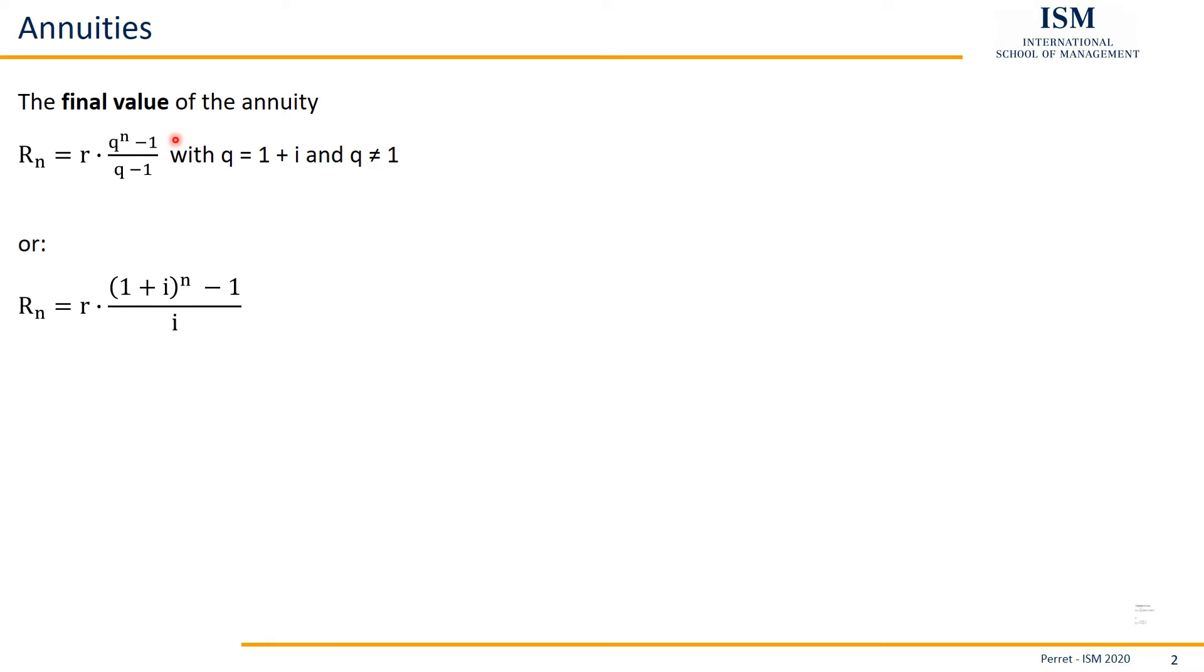For this, first let's rewrite this formula in a slight fashion by just replacing Q with 1 plus I, because then up here becomes 1 plus I to the power of N. Down here we have Q minus 1, so if we subtract 1 from this, we're only left with I. So this is a slightly different formula which however only uses the R, I, and N, the values we get in our exercise texts.